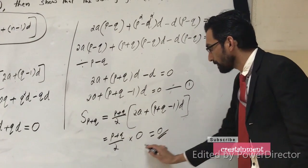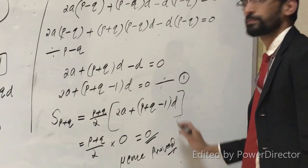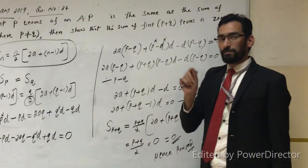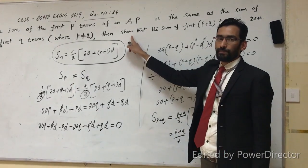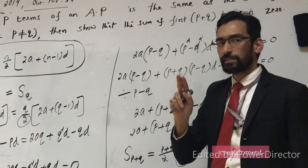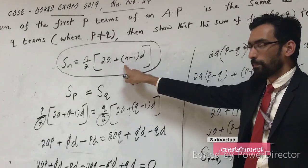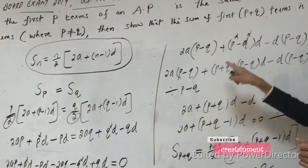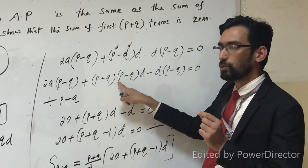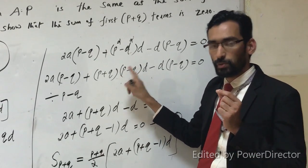Hence proved. This is a simple answer for this question. I hope you understand the method. Two things are applied: one is Sn equals N by 2 into 2a plus N minus 1 into d, and the second is the identity a squared minus b squared equals a plus b into a minus b.